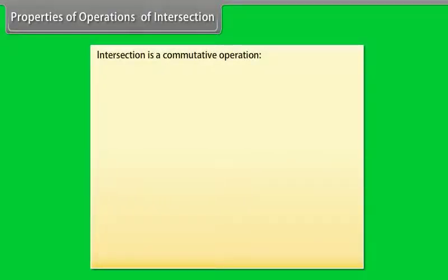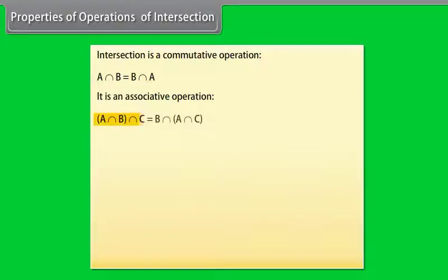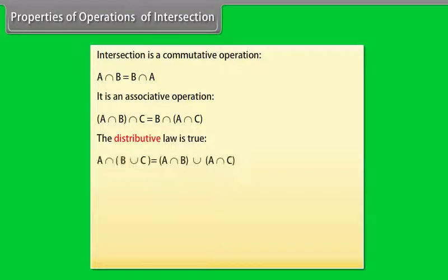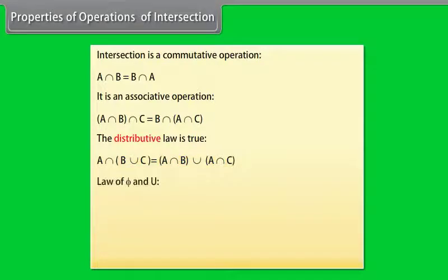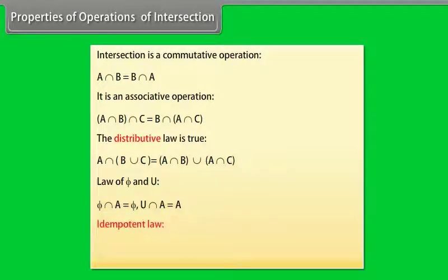Properties of operations of intersection. Intersection is a commutative operation: A intersection B is equal to B intersection A. It is an associative operation: A intersection (B intersection C) is equal to B intersection (A intersection C). The distributive law is true: A intersection (B union C) is equal to (A intersection B) union (A intersection C). Law of Phi and U: Phi intersection A = Phi; U intersection A = A. Idempotent law: A intersection A = A.